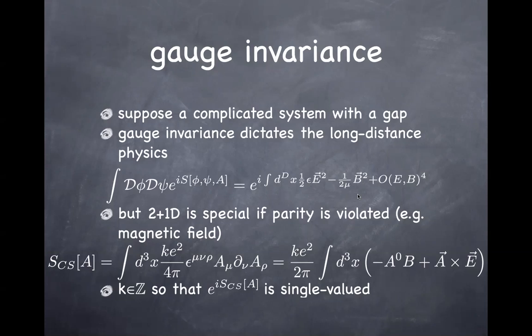This is the first statement one can make. The Chern-Simons term is allowed only in 2+1 dimensions, because as you can see, it has three indices contracted with the Levi-Civita symbol with three indices. So this is possible only in three dimensions — 2+1 dimensions — not in four dimensions, for example. And importantly, when you write this term in the effective action, the coefficient k actually has to be an integer.